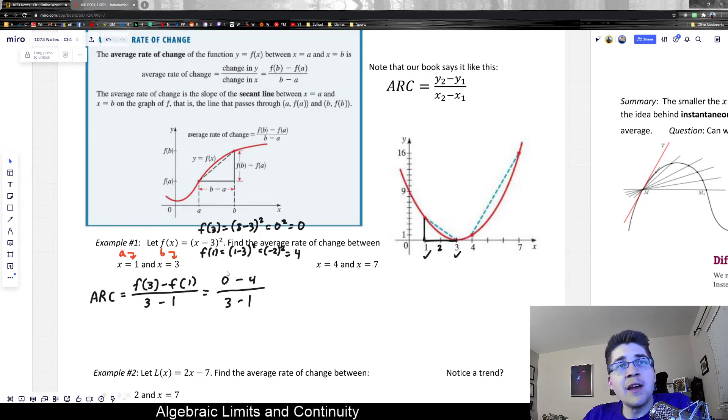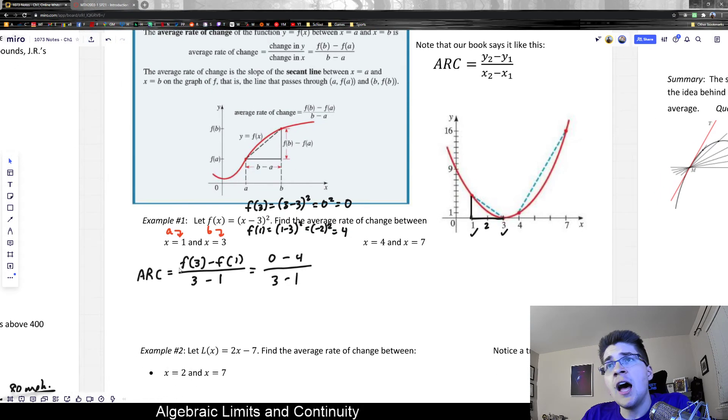So I'll plug that in right there. And the numerator, what that will do is give you delta y or the difference between y2 and y1. As we can see, y2 would be 0, that's the y value there, and y1 would be 4.